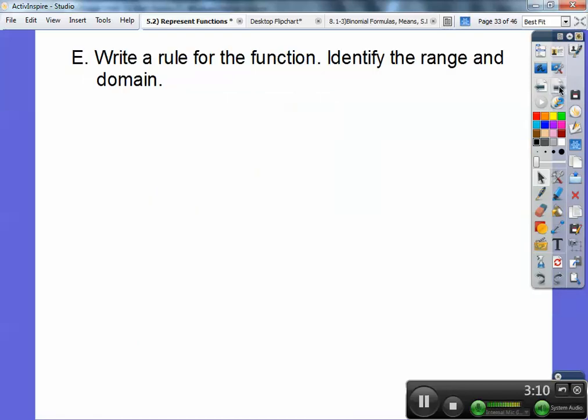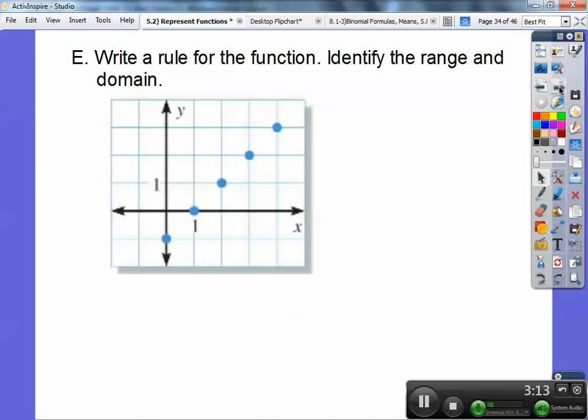All right, so write a rule for this function and identify the range and domain. So here's the picture right here. When you have that, first I want you to do is make a t-chart. So your t-chart, your x, y t-chart, and we're going to list all these ordered pairs. I'm going to list this one. Can you see that this ordered pair has the coordinates 0, negative 1?